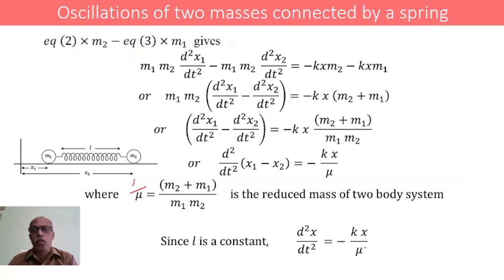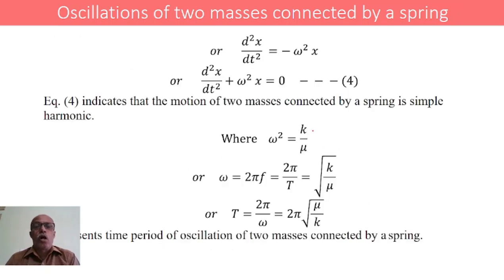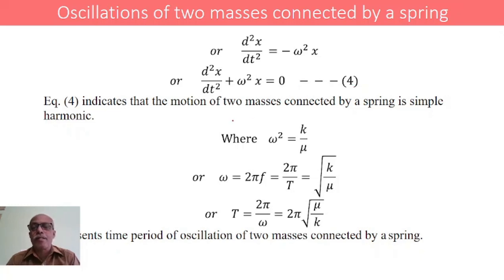Since l is a constant, d squared x by dt squared equals minus kx by mu, or equivalently d squared x by dt squared equals minus omega squared x, which can be written as d squared x by dt squared plus omega squared x equals zero. This equation indicates that the motion of two masses connected by a spring is simple harmonic, since this is the standard equation of motion of a body executing simple harmonic motion.